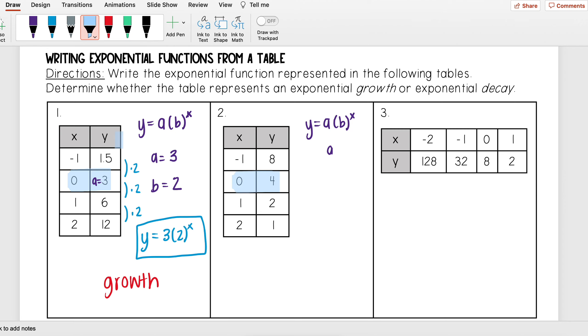I see that my y-intercept here is going to be four, so that means that my a is equal to four. Next, I want to figure out what my b value is.